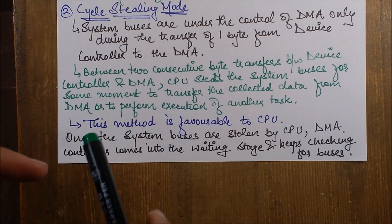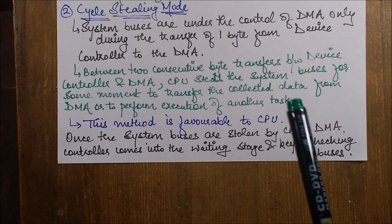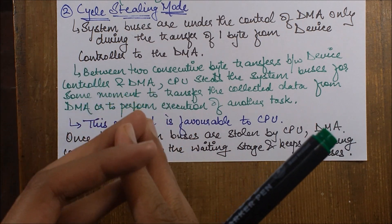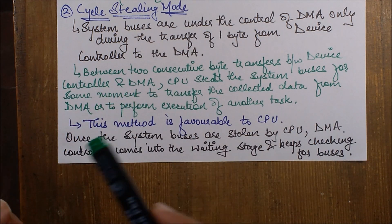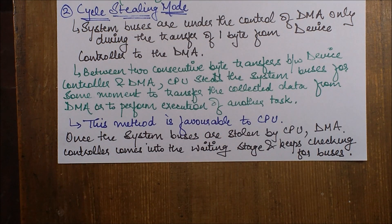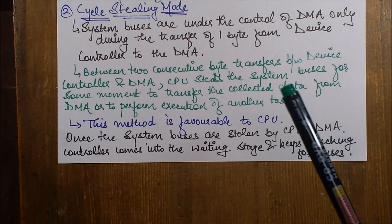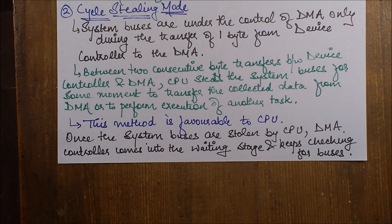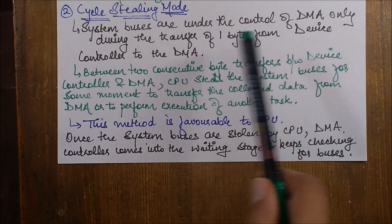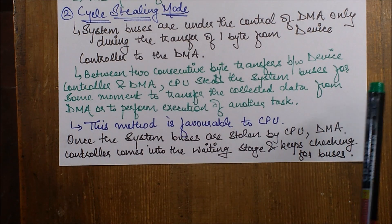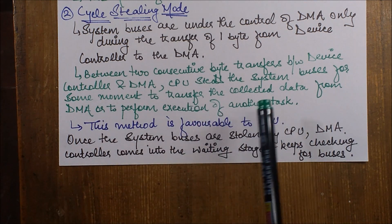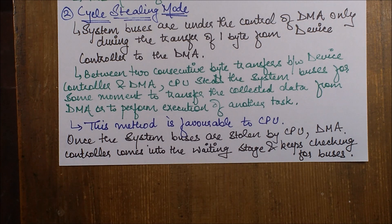Then the DMA collects the entire data from the device controller byte by byte, and after the entire set of data is collected, it is sent to the CPU. The system buses are under DMA control only during transfer between the DMA and the device controller. Between two consecutive byte transfers, the CPU steals the system buses for a moment to transfer collected data from the DMA or to perform execution of another task.